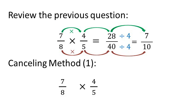In this case, you see the numerator 4 on top and denominator 8 on the bottom. Both have a common factor of 4. So you can divide 4 by 4, then you get 1, and 8 divided by 4, you get 2.